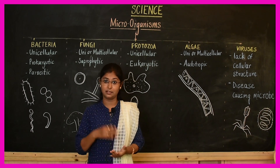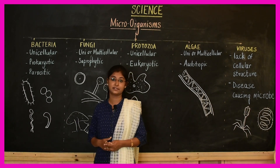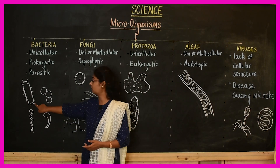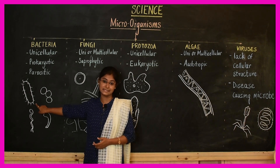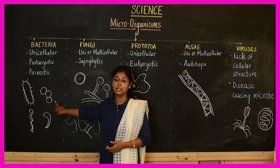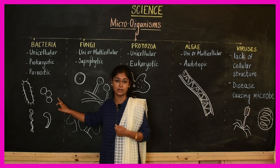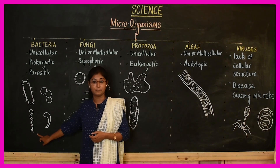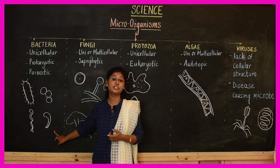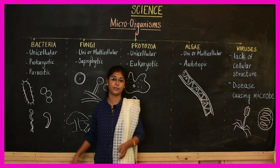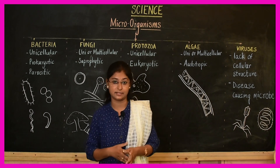Bacteria come in different types and shapes. A rod-shaped bacteria is called bacillus. A spherical or ball-shaped bacteria is called coccus. A spiral-shaped bacteria is called spirillum. And a comma-shaped bacteria is called vibrio.